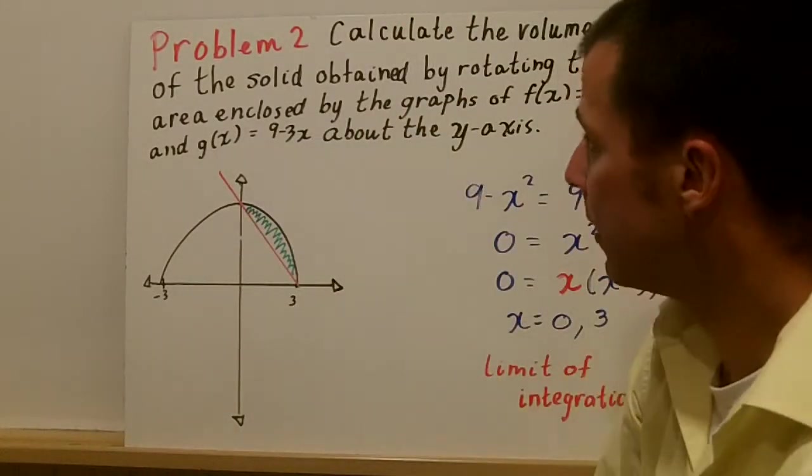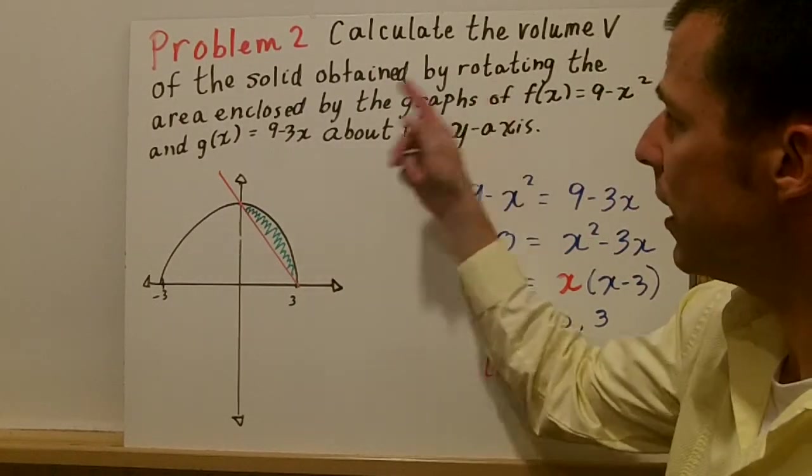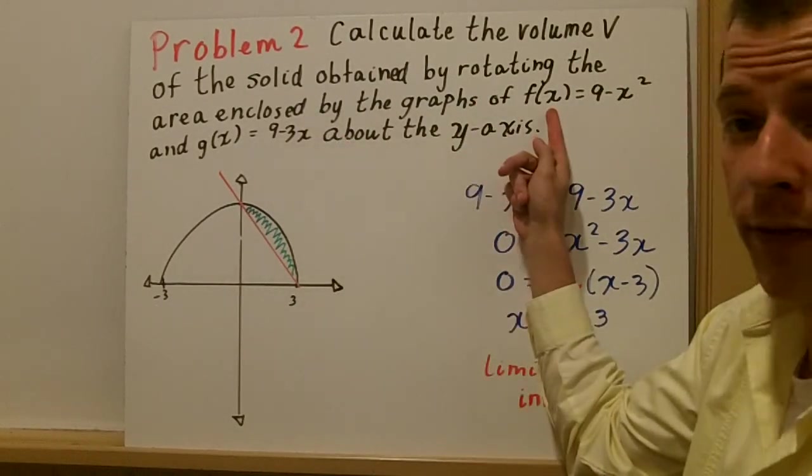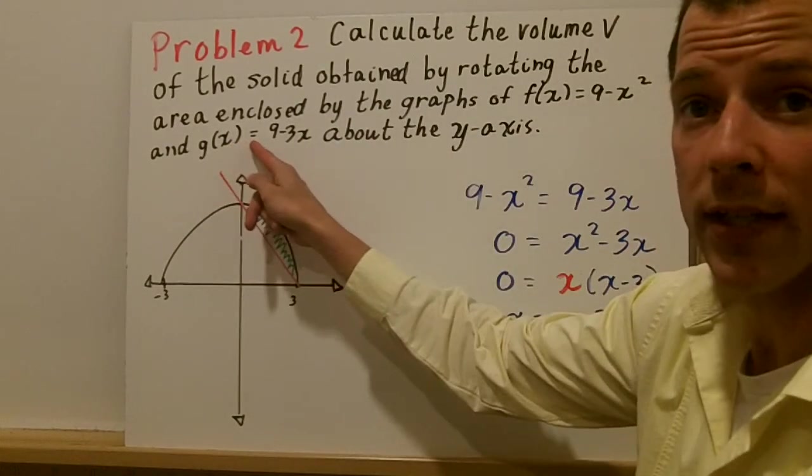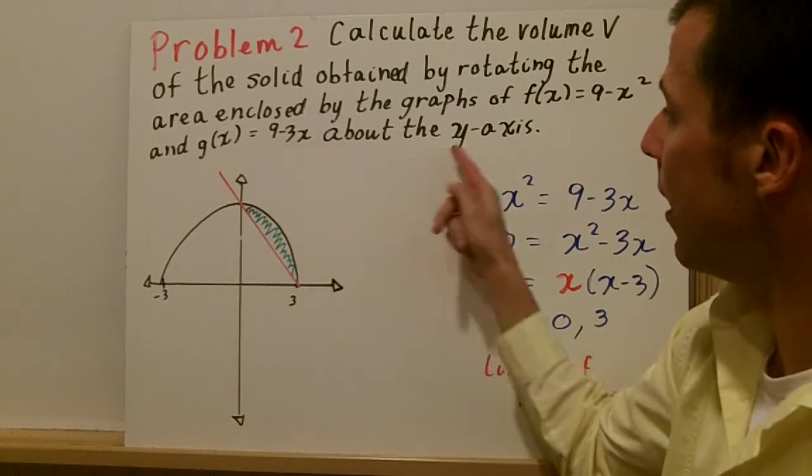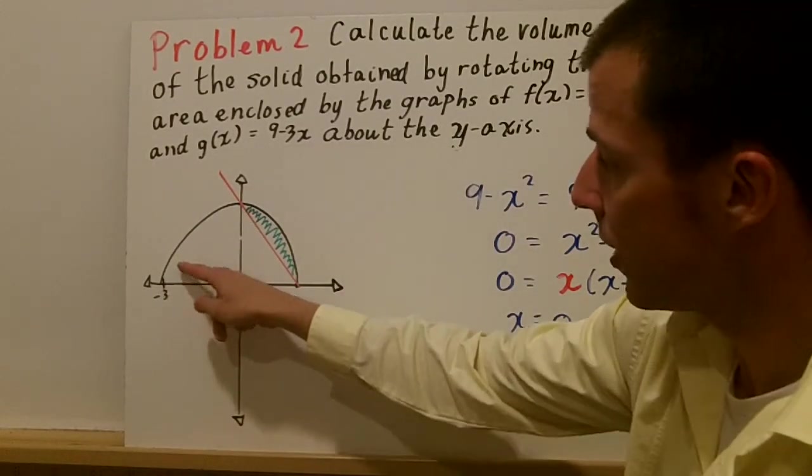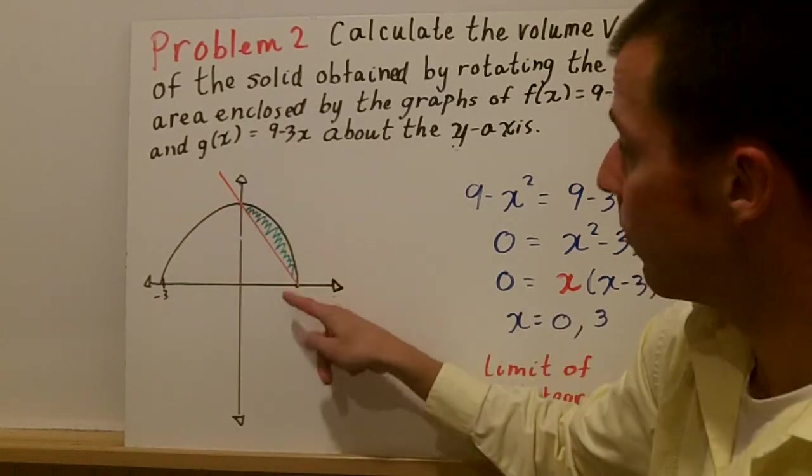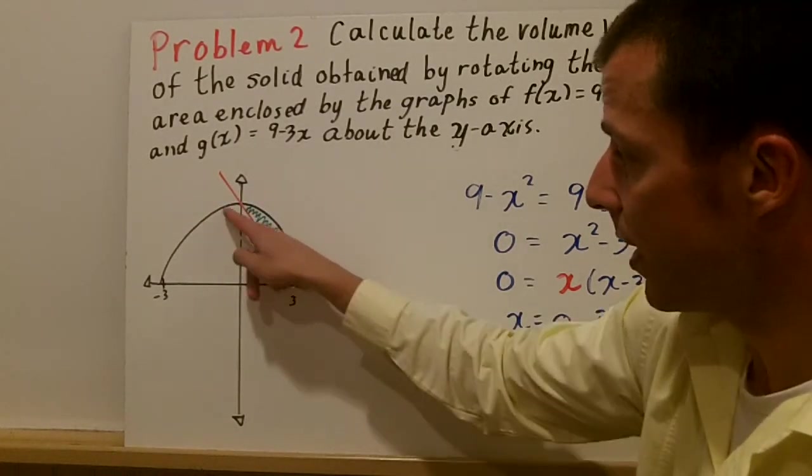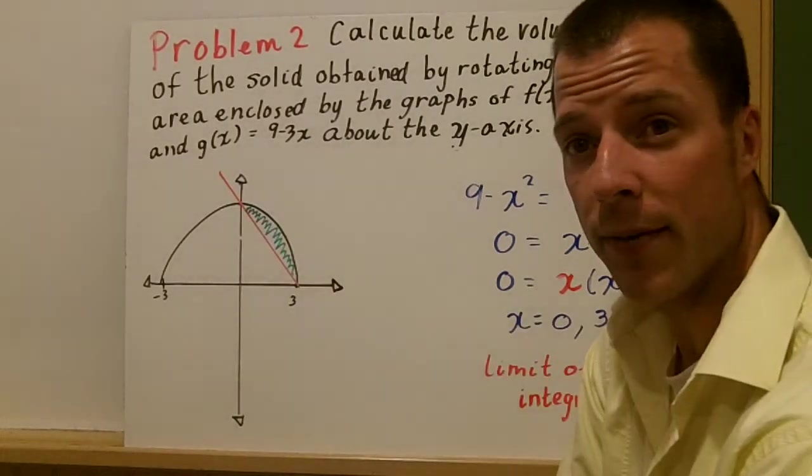Let's look at a problem that has that in there. We're going to calculate the volume of the solid. We're rotating the area enclosed by f(x) equals 9 minus x squared, and g(x) equals 9 minus 3x about the y-axis. I've drawn the two functions in black, I have 9 minus x squared, and we have 9 minus 3x here. You can see graphically they intersect at 0 and 3.